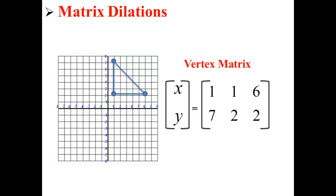We can organize these xy coordinates into a vertex matrix. So now we have our points 1, 7, 1, 2, and 6, 2, but now they're in a vertex matrix.